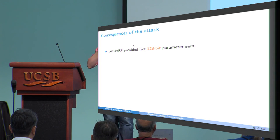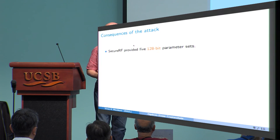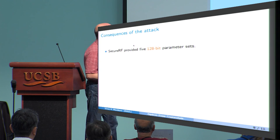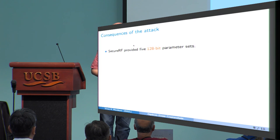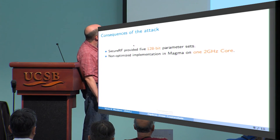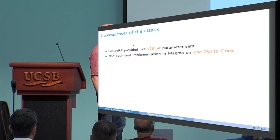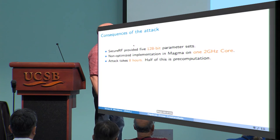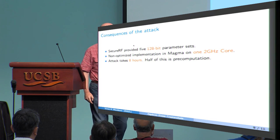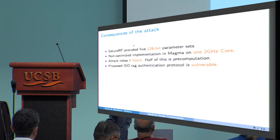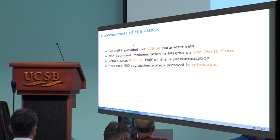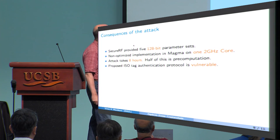So, what's the outcome from this? Secure-RF very kindly gave us five 128-bit parameter sets, sort of five challenges. And this is the only way where you can cryptanalyse the scheme, because otherwise, we don't know how these parameters are generated. But they kindly provided them to us. And unfortunately, for them, a non-optimized implementation in Magma, on a single 2 gigahertz core, gave an attack in eight hours. And actually, half of this is pre-computation. So phase zero takes about four hours, and the remaining stuff takes about four hours. So this also makes the ISO tag authentication protocol that's proposed very vulnerable to the attack. So it's a pretty efficient attack, very efficient attack.